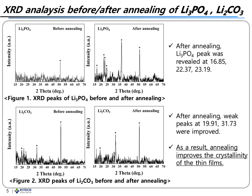The fabricated thin films were annealed at 600 degrees Celsius for 2 hours and XRD analysis was conducted. After annealing, lithium phosphate showed peaks at 16.85, 22.37, and 23.19. Lithium carbonate peaks were observed at 19.91 and 31.73. As a result, the annealing process improved the crystallinity of the thin films.